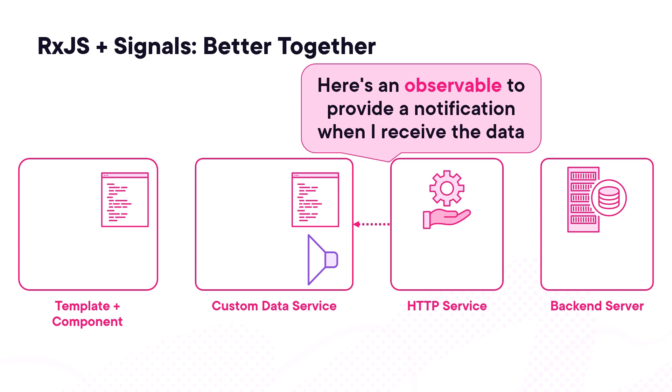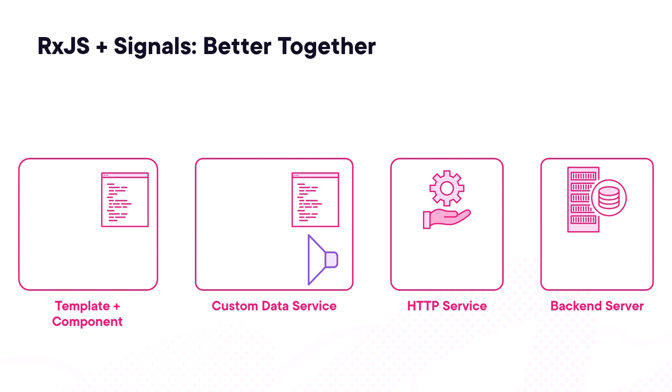The HTTP service sends the HTTP request to the backend server. That server may run some code, call a stored procedure to retrieve the data, and run more code to process that data before returning a response. In the meantime, the Angular application continues running — it may display the template even though it has not yet received the data it requested.